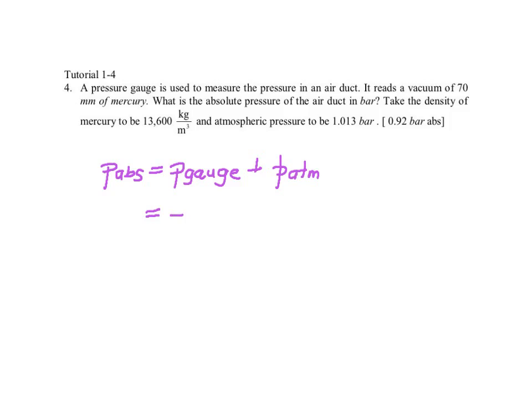which is minus 13,600, multiplied by 0.07, to change millimeters into meter, multiplied by G, 9.81,